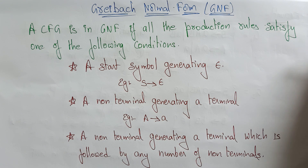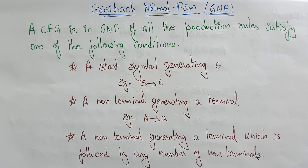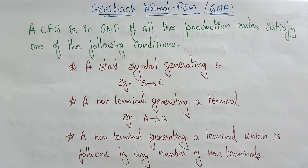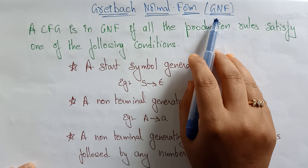Hi students. Now let's see GNF. So far you have seen about CNF, that is the Chomsky Normal Form — what it is, the steps to convert the context-free grammar to Chomsky Normal Form, and examples on conversion. Now coming to another type of normal form, that is the Greibach Normal Form.